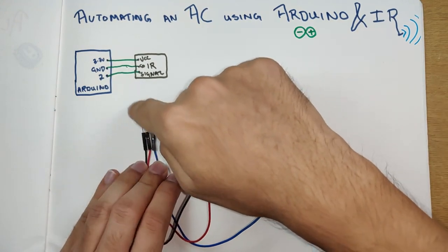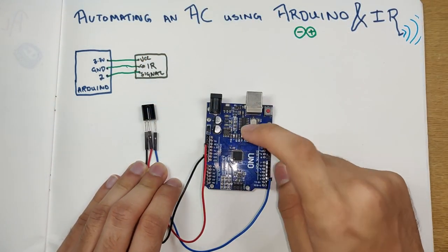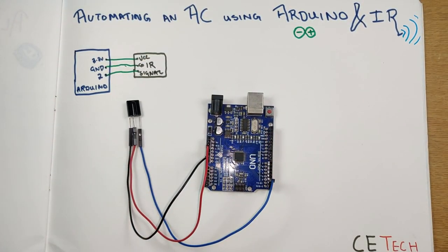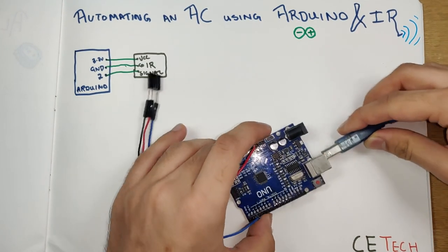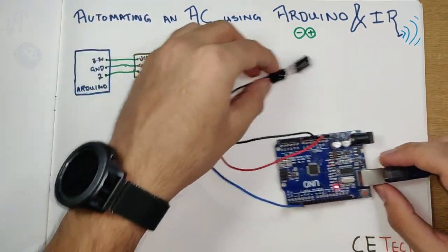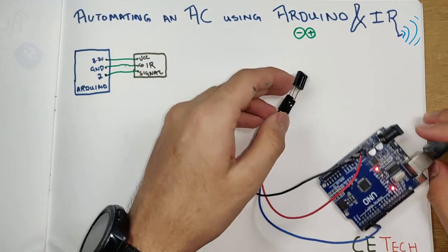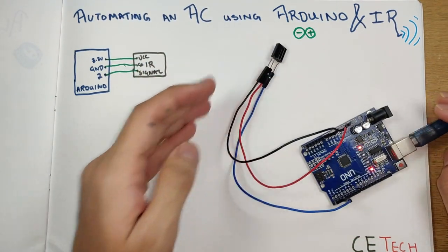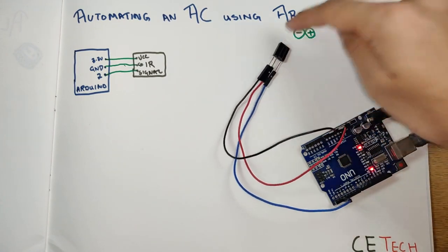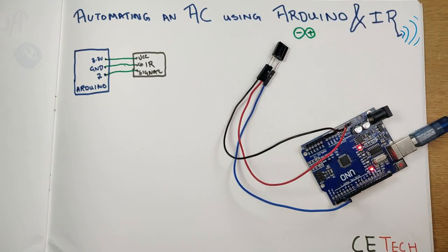I've connected the infrared receiver to the Arduino Uno according to the circuit diagram. Next, I connect the Arduino Uno to my computer, and we can move on to the coding part so that we're ready to receive signals on the IR receiver.